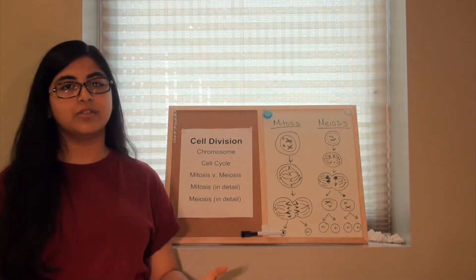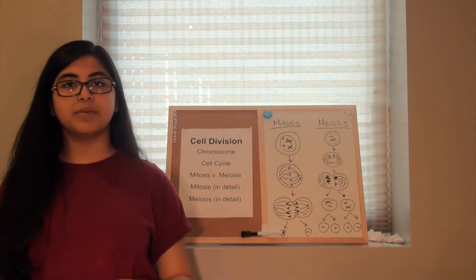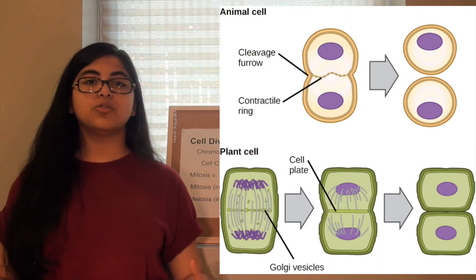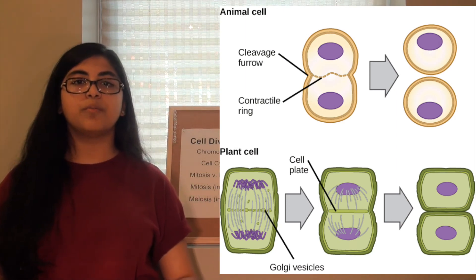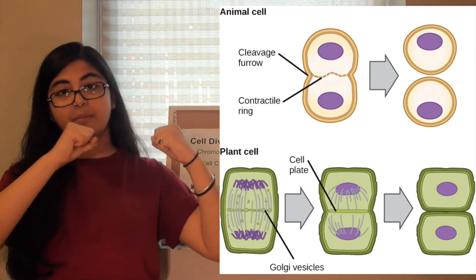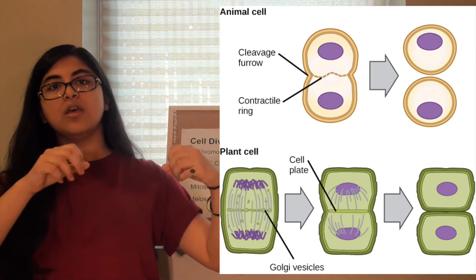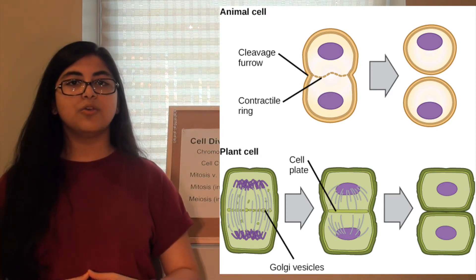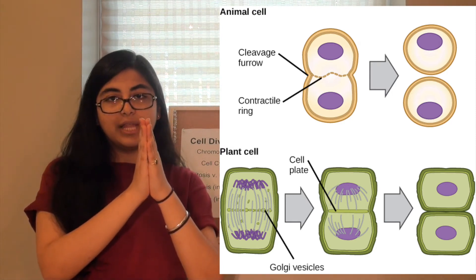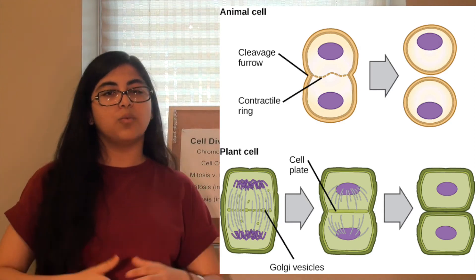And then after mitosis you have cytokinesis and that is basically the division of the cytoplasm of the cell. So in animal cells you get what is called a cleavage furrow because the cell starts to pinch in between so it could separate into the two different cells. Well in plant cells you get what is called a cell plate in between along with the middle lamella so then they separate in that way.